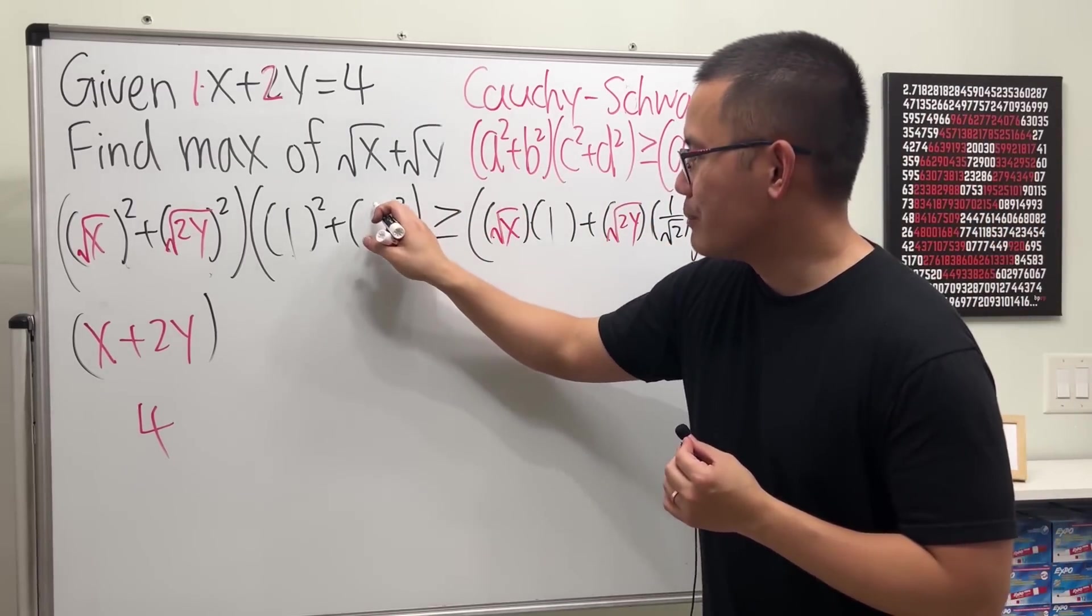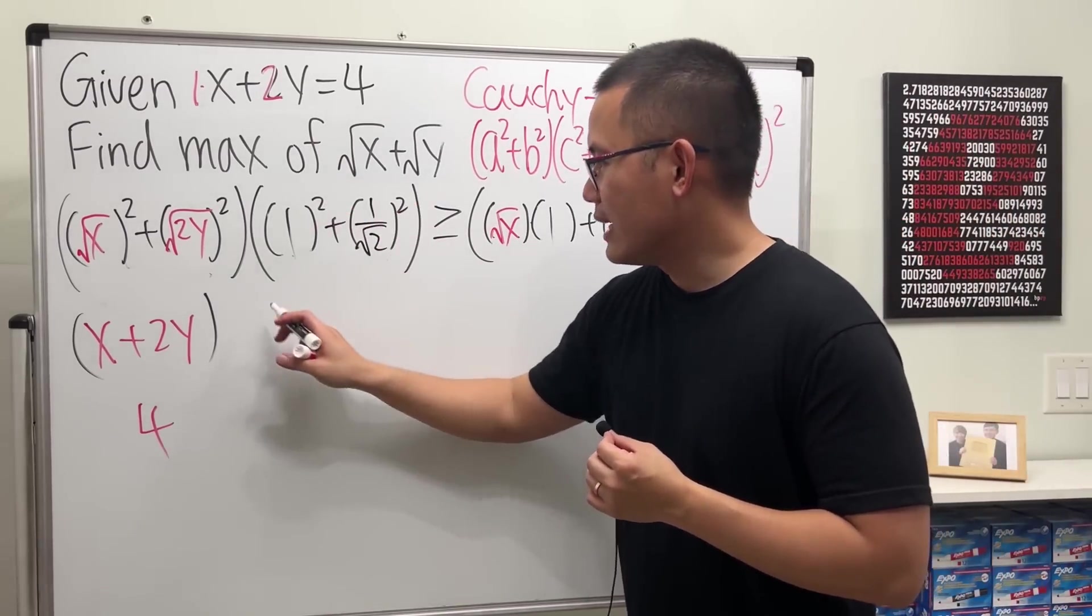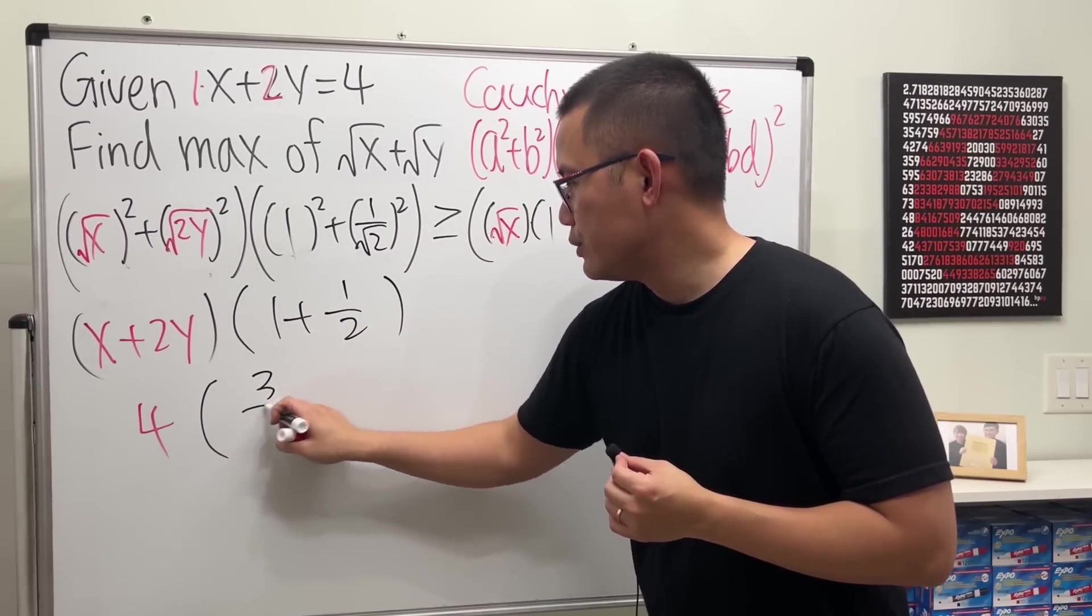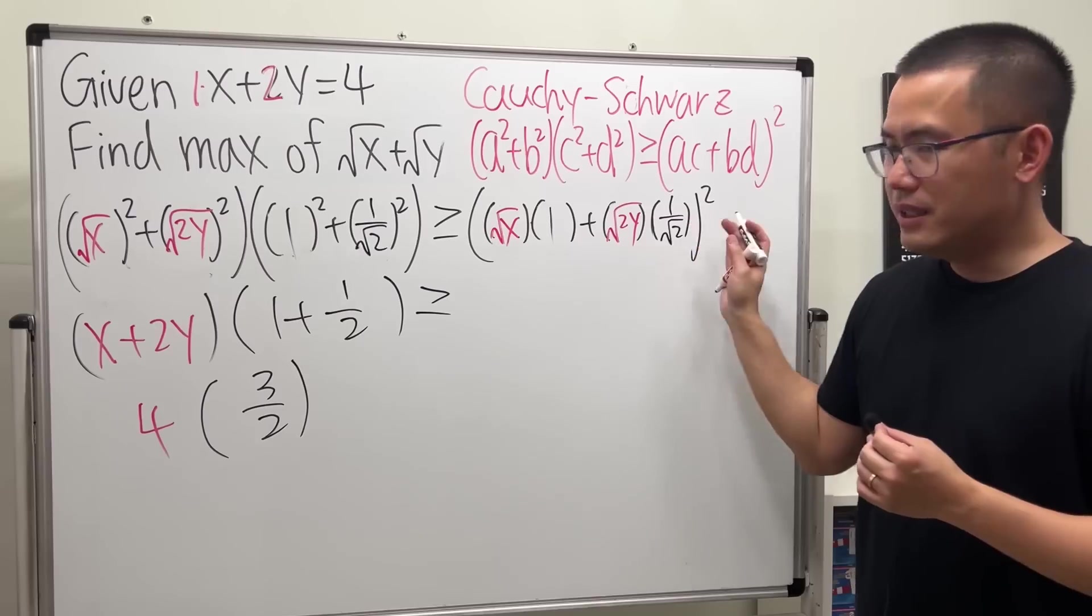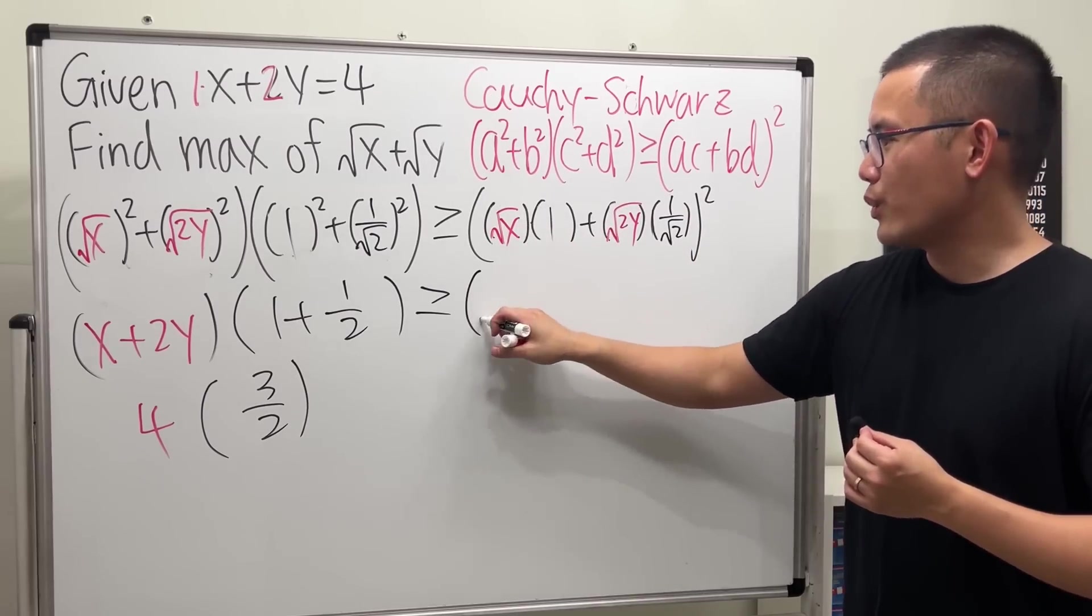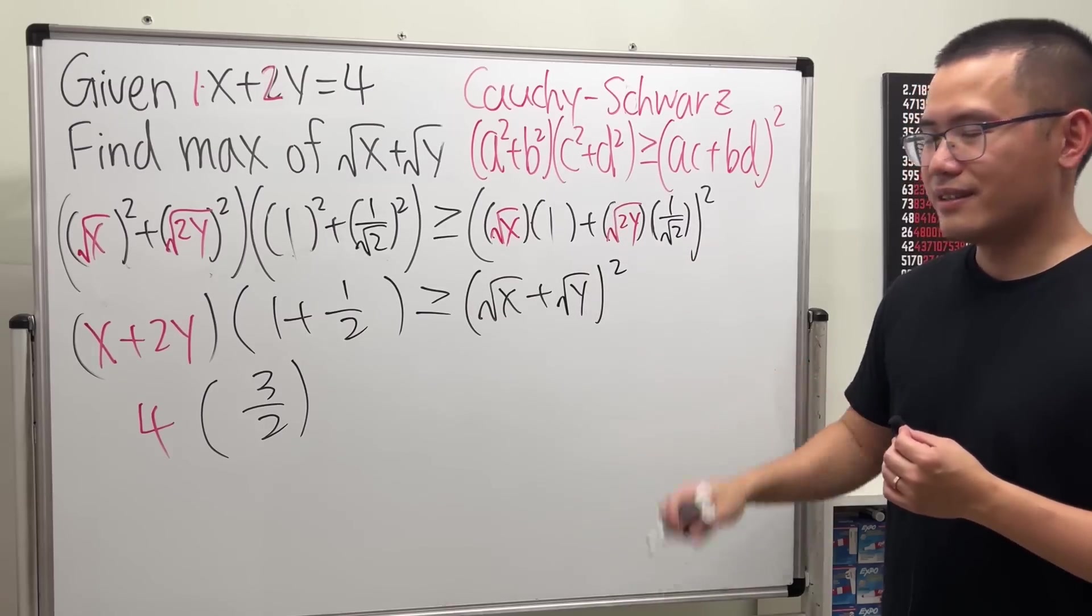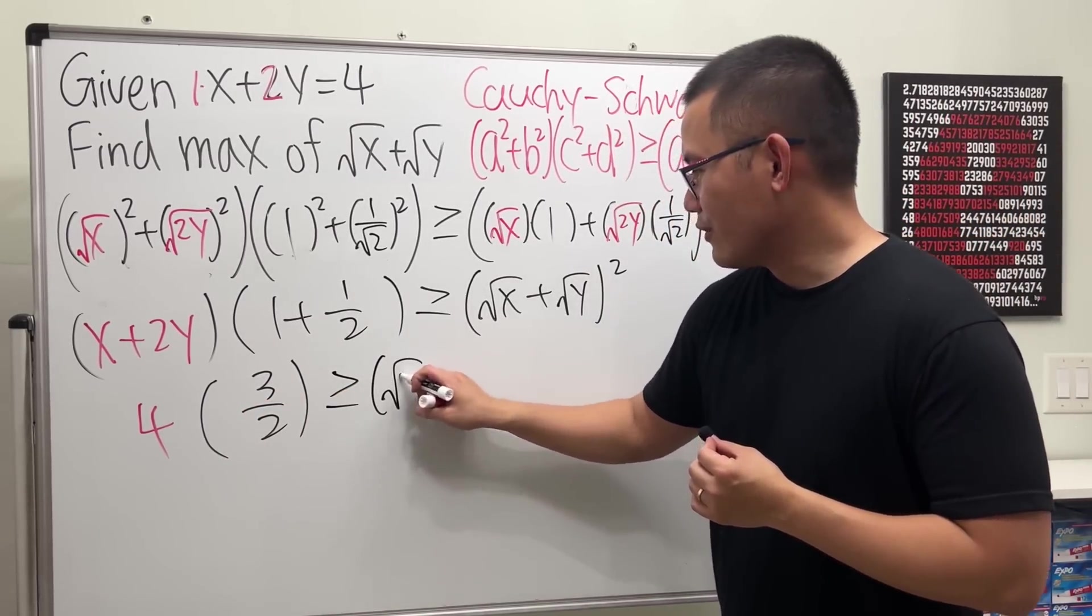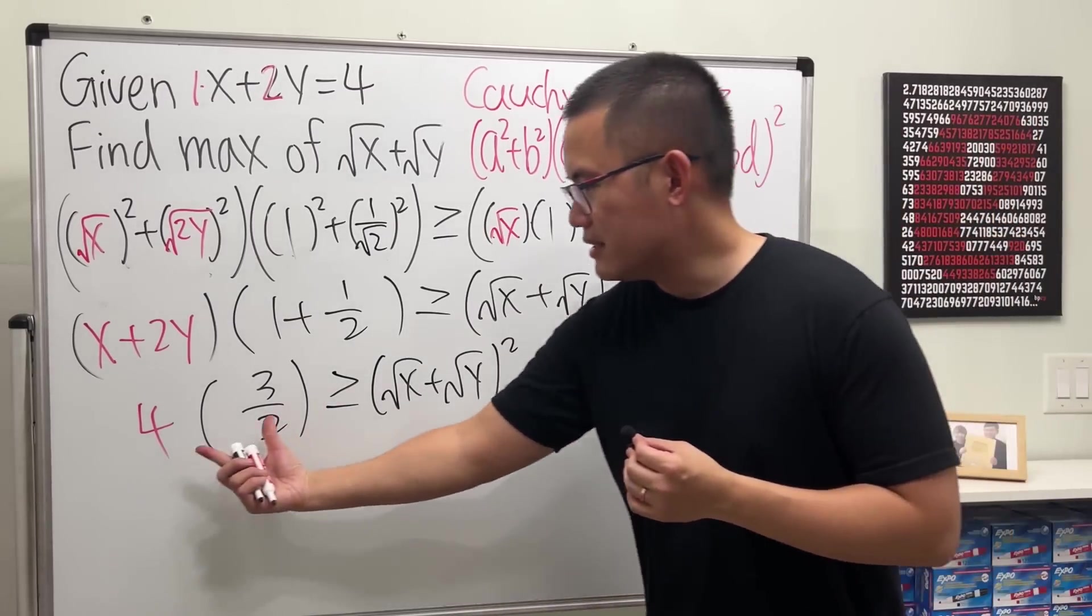Now, have a look. Work that out. It's just 1 plus 1 half, which is just 3 half. And we know that has to be greater than or equal to this is just square root of x plus they cancel square root of y squared. So, this is greater than or equal to square root of x plus square root of y squared. This is just 6.